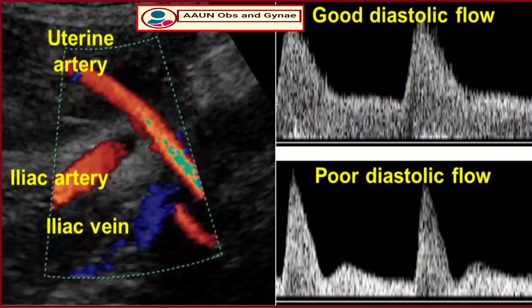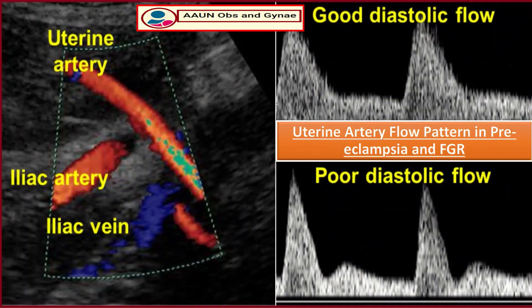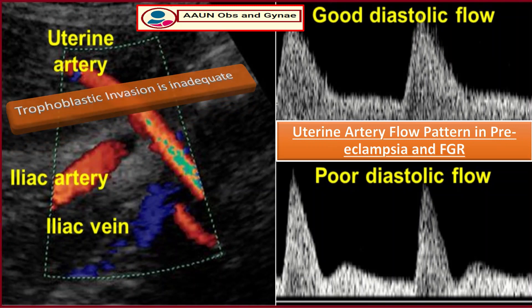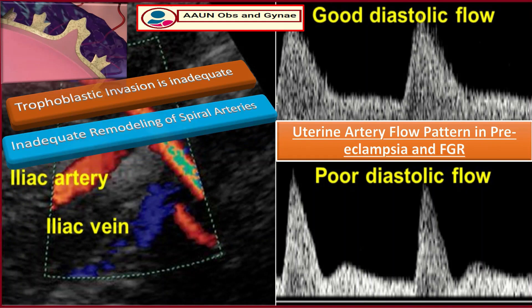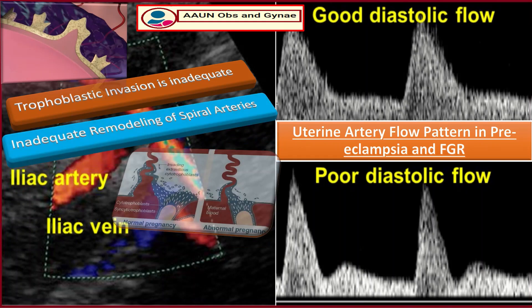In pre-eclampsia and fetal growth restriction, the trophoblastic invasion is inadequate — only few cells invade the decidua and do not reach the myometrium. This consequently results in inadequate remodeling of the spiral arteries.